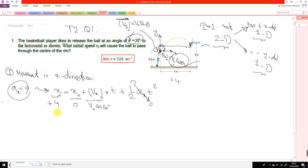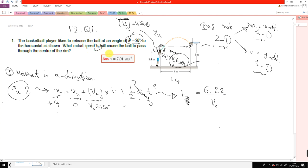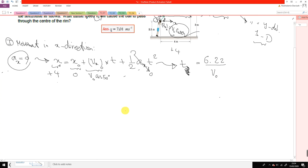And this is just a linear equation. I can find t as a function of initial velocity, the initial speed. t equals 6.22 divided by V0. And the question asks, do we need to find the value of initial velocity? We need to find this value.